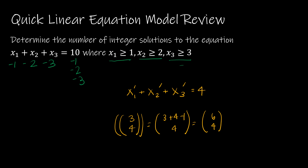You might ask, if it ain't broke, don't fix it. The problem arises when we have an upper bound. For example, if x3 is between 3 and 7, we don't know how to handle that upper bound with the old method. That's where the Principle of Inclusion-Exclusion — finding the number of ways a condition is not met — comes into play.